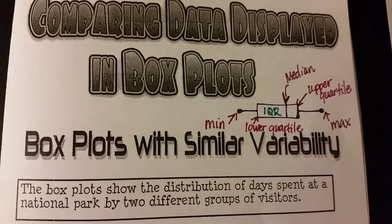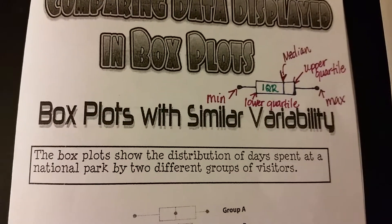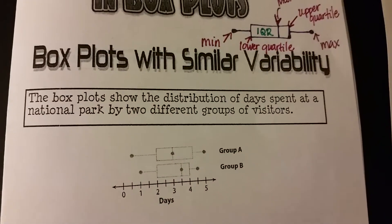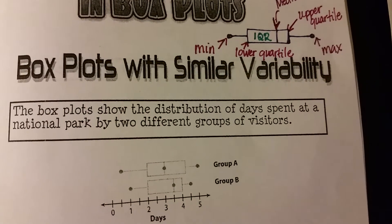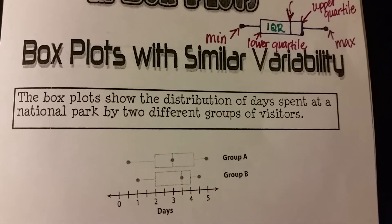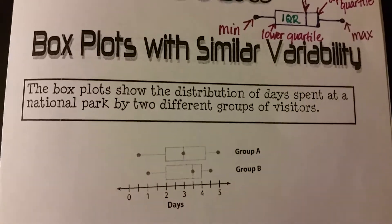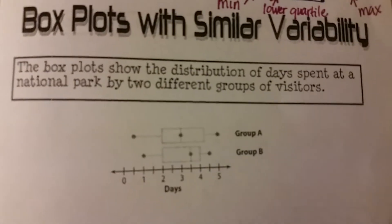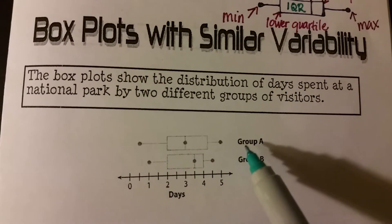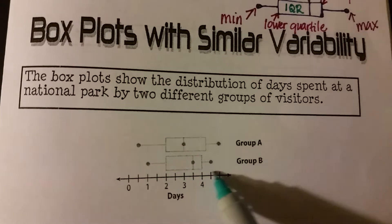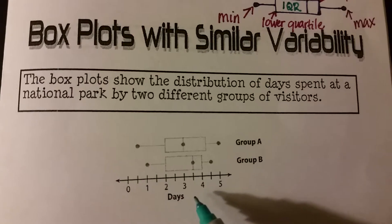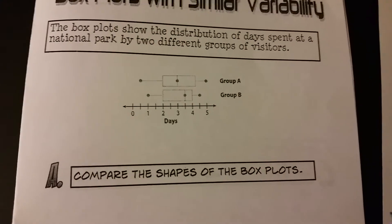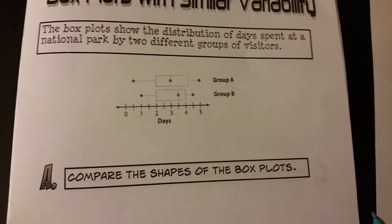Now we're going to look at an example with similar variability. The box plot shows the distribution of days spent in a national park by two different groups of visitors. Here is Group A's data and here is Group B's data, showing the number of days spent at the national park. Part A says: compare the shapes of the box plots.